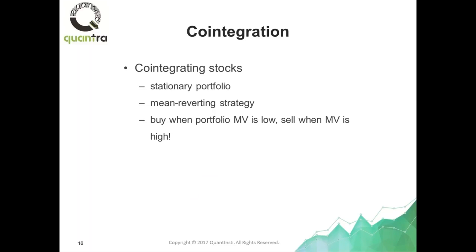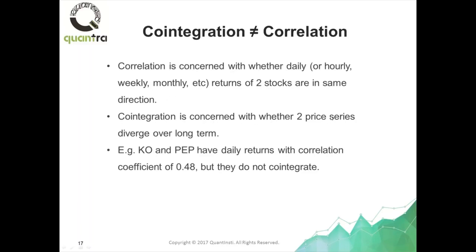To recap: cointegrating stocks are stocks that can be used to form a stationary portfolio, and a stationary portfolio is suitable for a mean-reversion strategy. Buy when the portfolio is cheap, and sell when the portfolio market value is high, and vice versa. You trade the portfolio as if you were trading an ETF or a single stock.